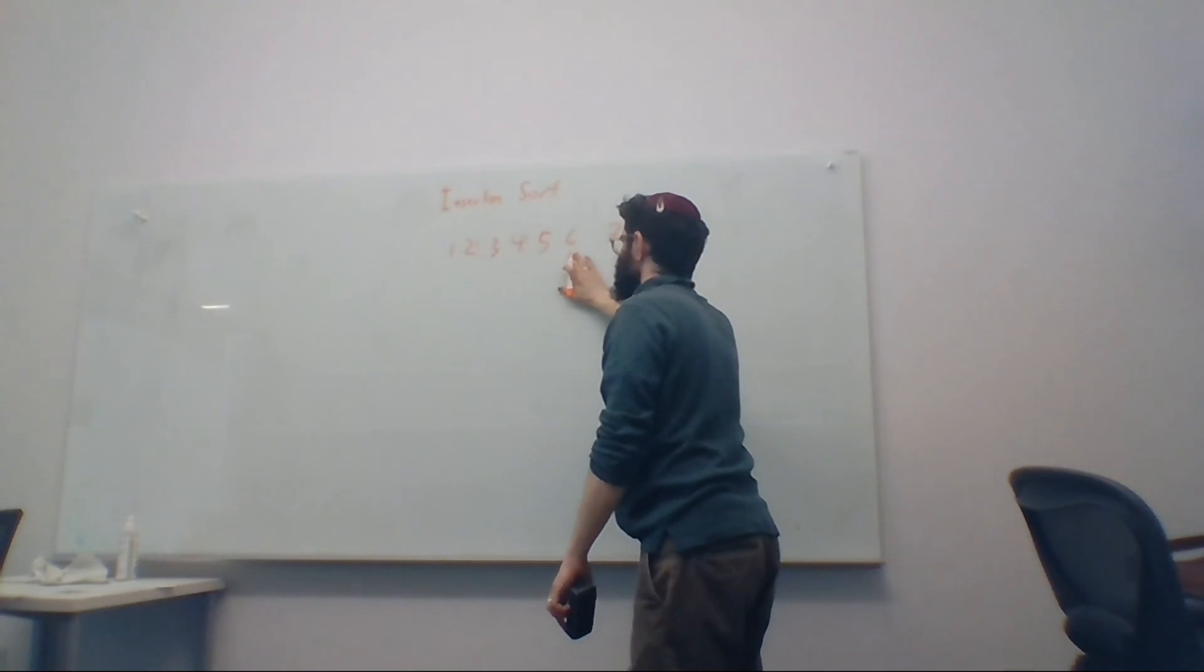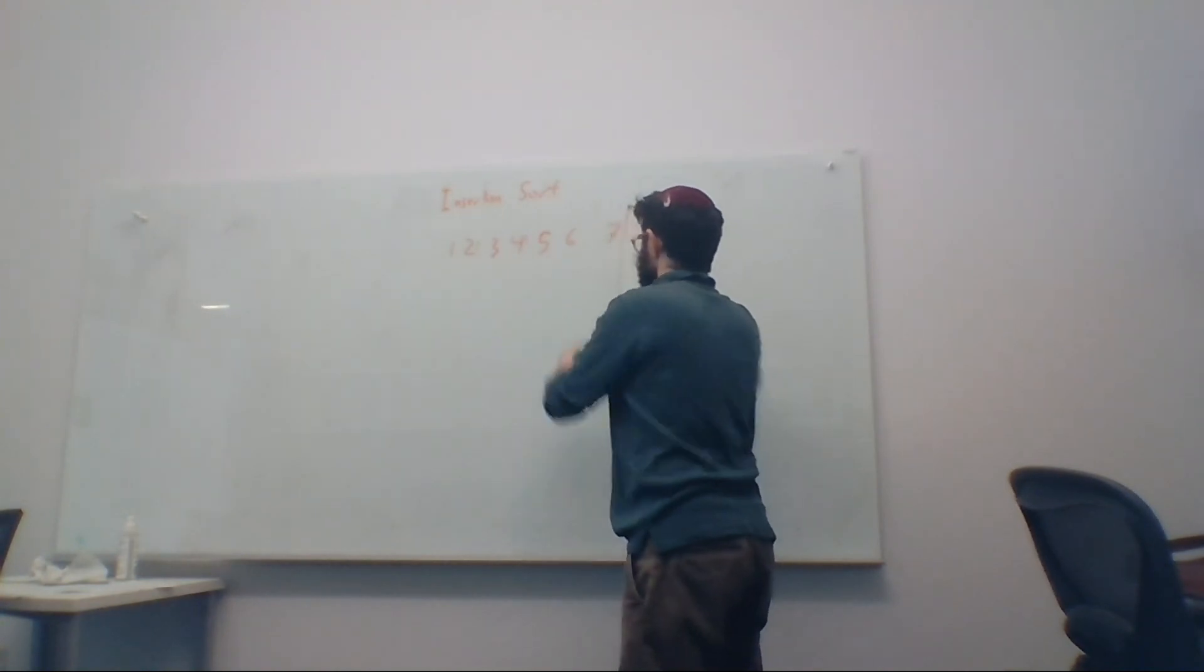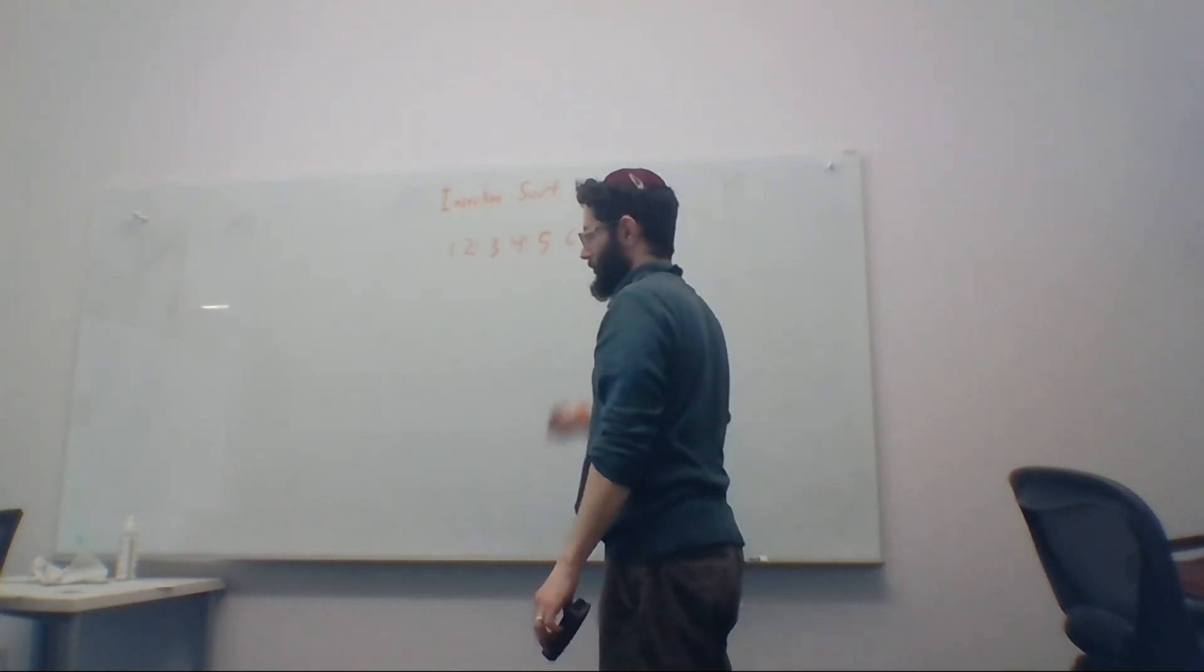Seven compared to six. Well, seven is bigger than six, so we don't need to insert it anywhere. And then eight is bigger. Then we've got to insert eight. Eight is bigger than seven. We don't need to insert it anywhere, so we can just move on to the next one. But there is no next one, so we're done.